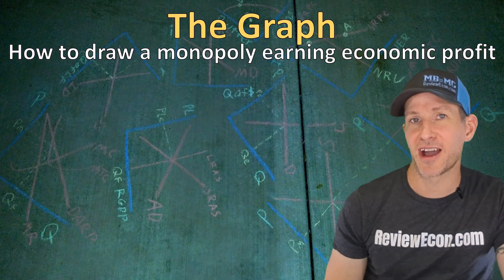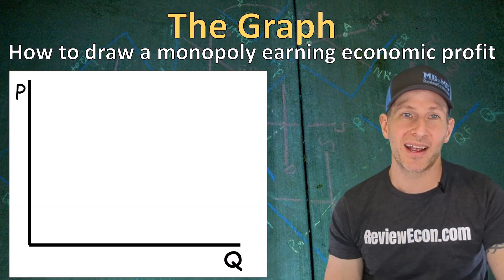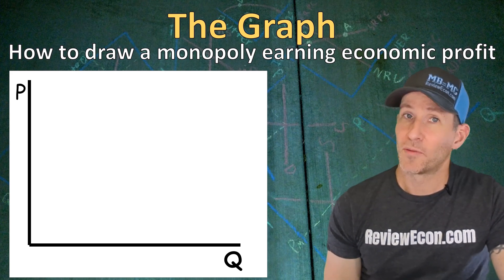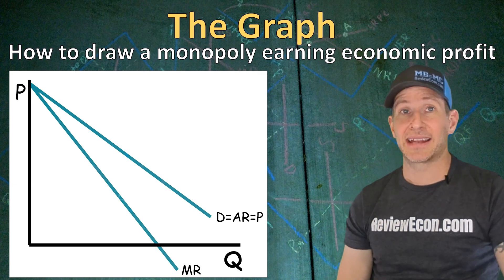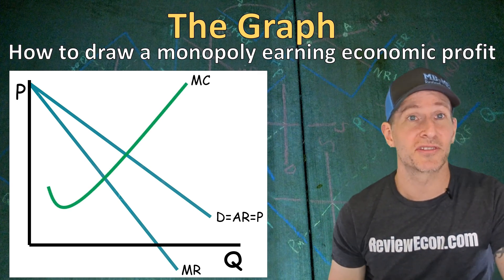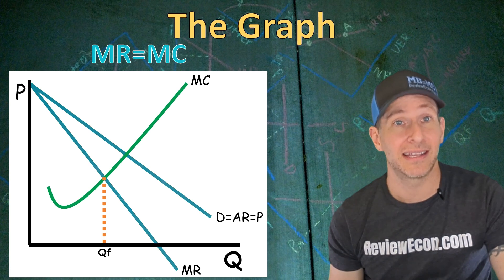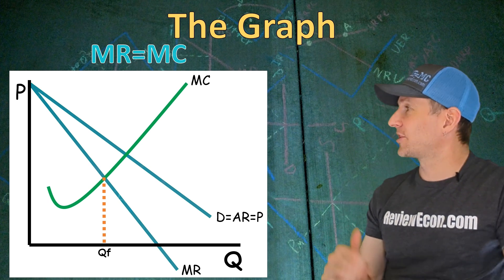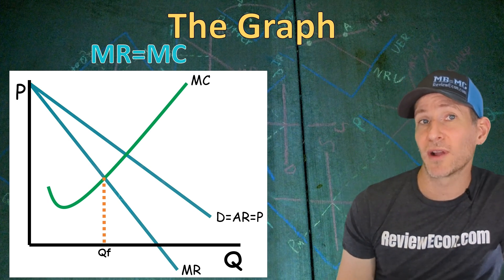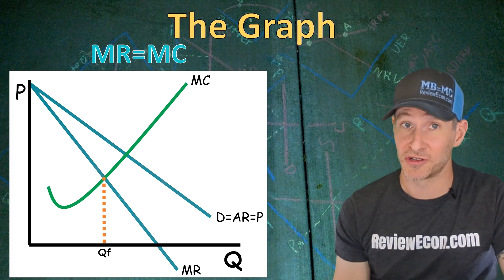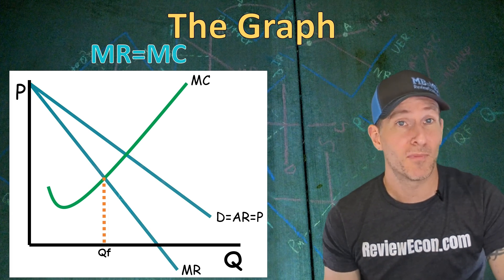Now we're going to take a look at the graph for a monopoly and learn how to draw it. First we need our x-axis and y-axis: the y-axis is labeled P for price and the x-axis is labeled Q for quantity. We have the downward sloping demand curve with marginal revenue below, as we just saw. Next we add in the marginal cost curve — it looks the same as for perfectly competitive firms, and just like perfectly competitive firms they produce where MR equals MC. Find that intersection between those two curves and drop down to the x-axis — that is the firm's profit-maximizing quantity. At lower units of output marginal revenue will be greater than marginal cost, so the firm should produce more. At higher quantities marginal revenue will be less than marginal cost, so the firm makes more profit by producing less.